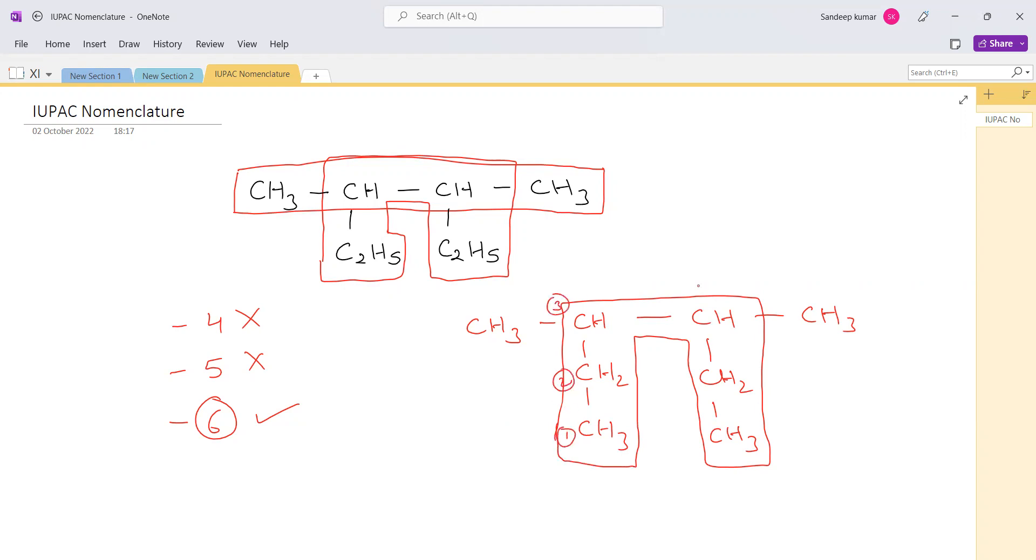three, four, five, six. Numbering can be done from either side, from the right-hand side or from the left-hand side, no worries. And these two are the substituents. Any organic compound contains three things in it: first is a prefix, second is a word root, and third is a suffix. So prefix over here